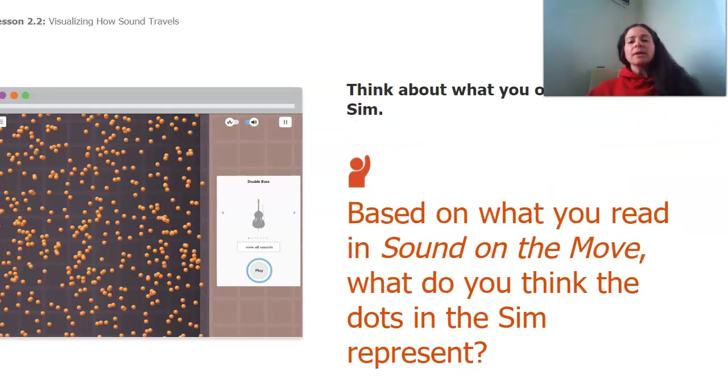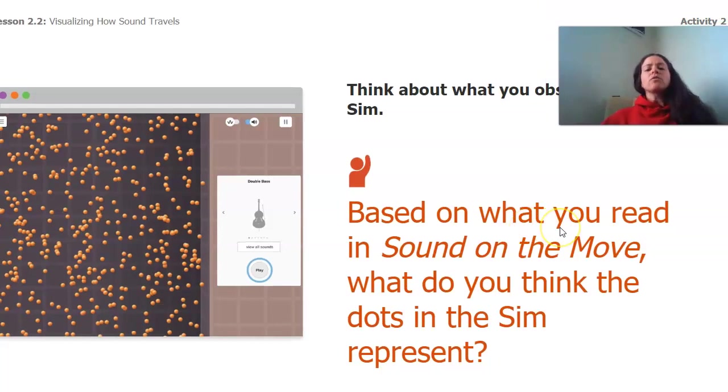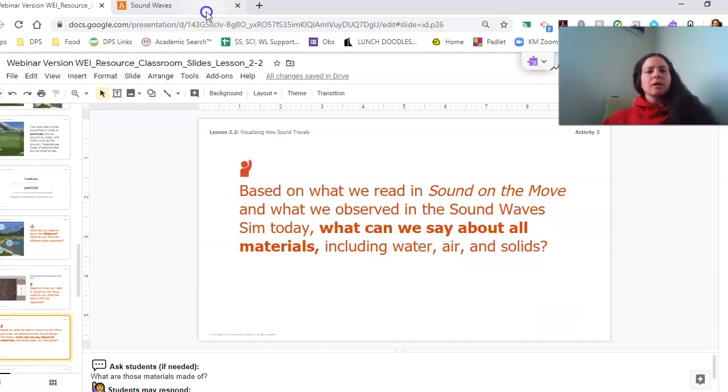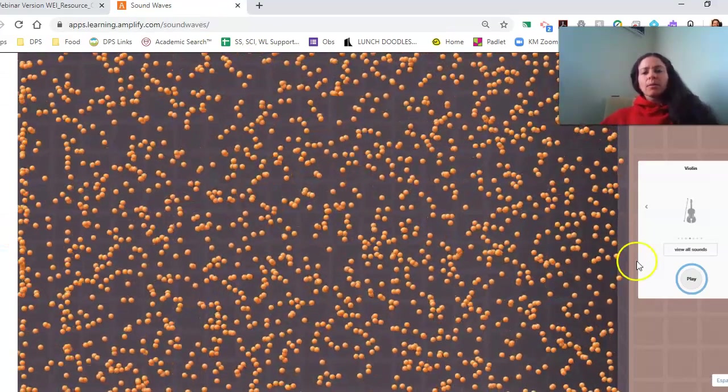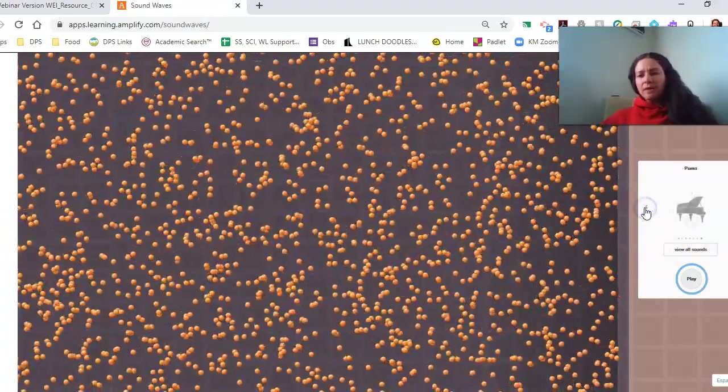I also want you to think about what you observed in the sim. So based on what you read in Sound on the Move, what do you think the dots in the sim represent? So we're back in the sim. I'll choose a different instrument for you this time. Let's do a piano.